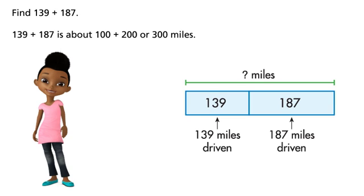Find 139 plus 187. 139 plus 187 is about 100 plus 200 or 300 miles.